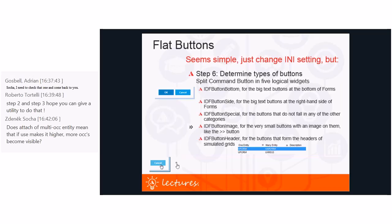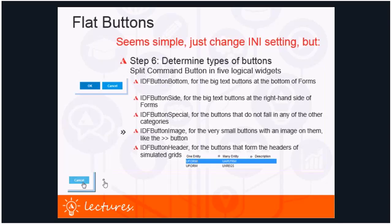The button groupings are: IDF_button_bottom for the large buttons at the bottom of forms; IDF_button_side for large text buttons at the right-hand side; IDF_button_special for all other buttons not in the first two categories; IDF_button_image for very small buttons with an image, like the 'more' button; and IDF_button_header for buttons that form the headers of simulated grids — the column headers you can click to sort.